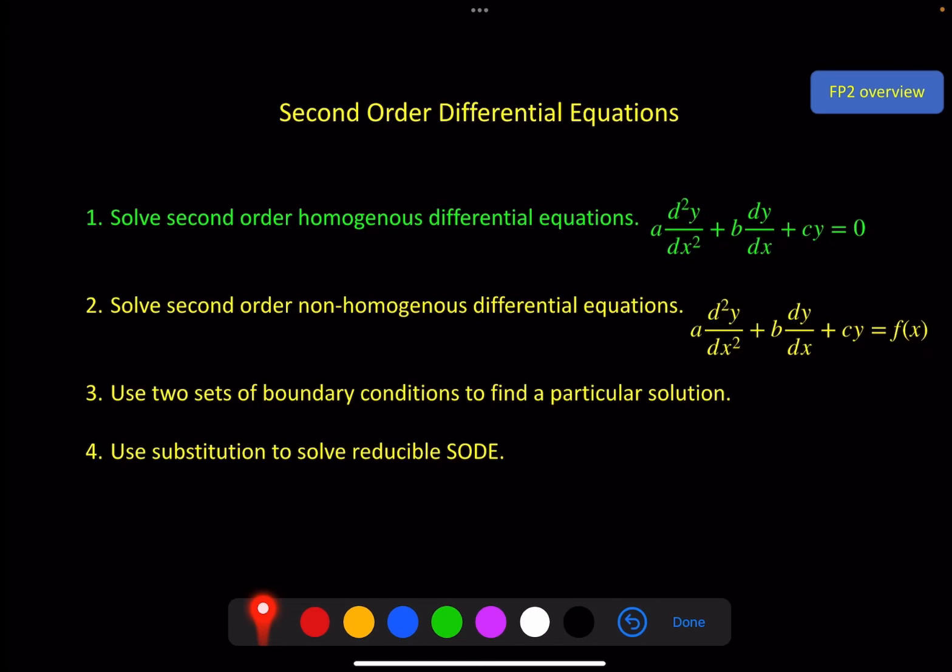Then we'll look at boundary conditions to find particular solutions, very similar to what we did in the previous chapter. And also similar to the previous chapter, we will use substitution to solve reducible SODEs in the last section.